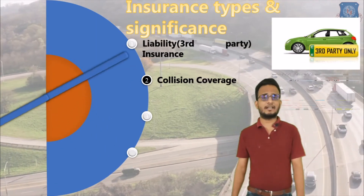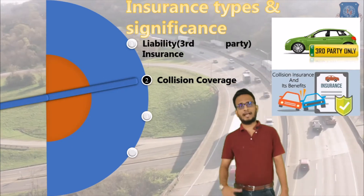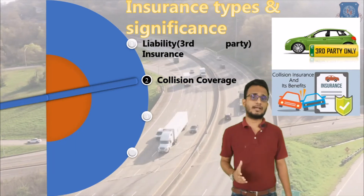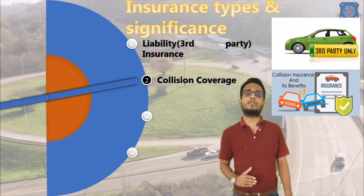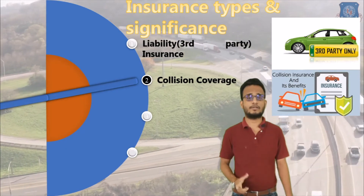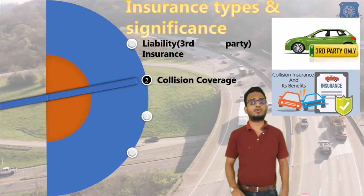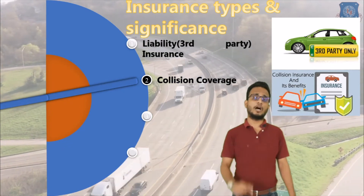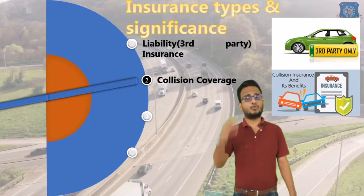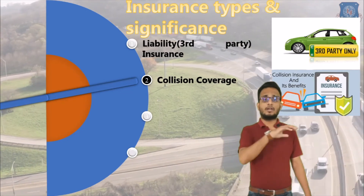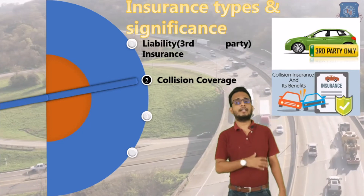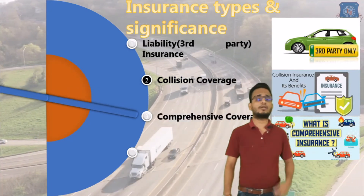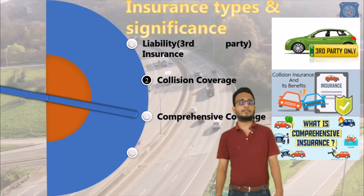Now we will discuss insurance types and their significance. The first is third-party insurance and the second is collision coverage. Third-party insurance is mandatory — whether your vehicle is new or more than five years old, you must have it. Without third-party or liability insurance, you cannot drive any vehicle on the road. Collision coverage is optional, but third-party insurance is a must for two-wheelers, three-wheelers, four-wheelers, and multi-axle vehicles. Collision coverage helps you recover money from the insurer when you meet with a fatal accident.